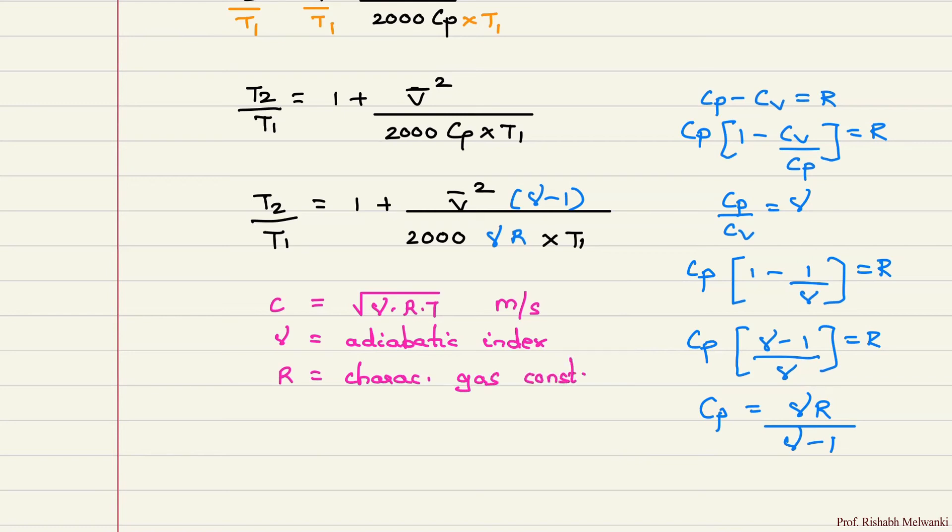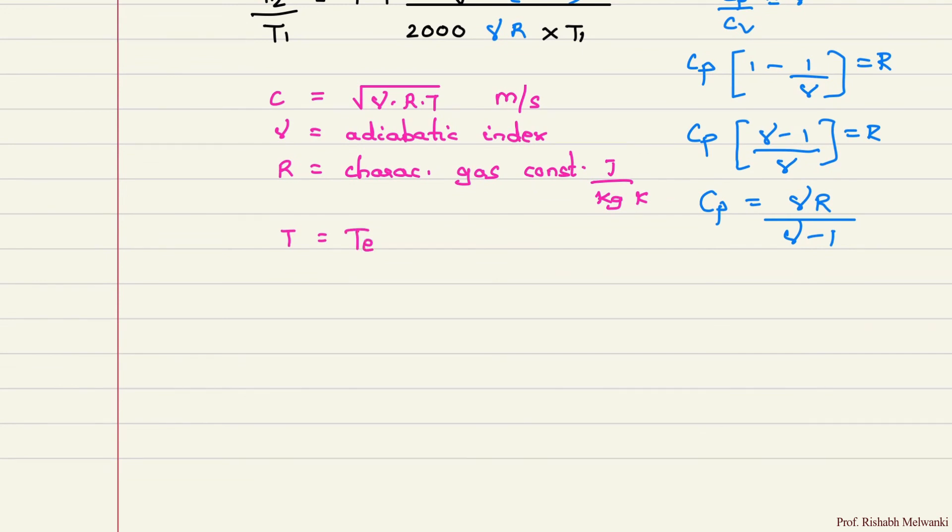R is characteristic gas constant. Here unit of R is joules per kilogram Kelvin. Now remember that in this derivation, whatever R we are using here, the unit of R is kilojoules per kilogram Kelvin. But for this equation, unit of R is joules per kilogram Kelvin, so we need to take care of that.